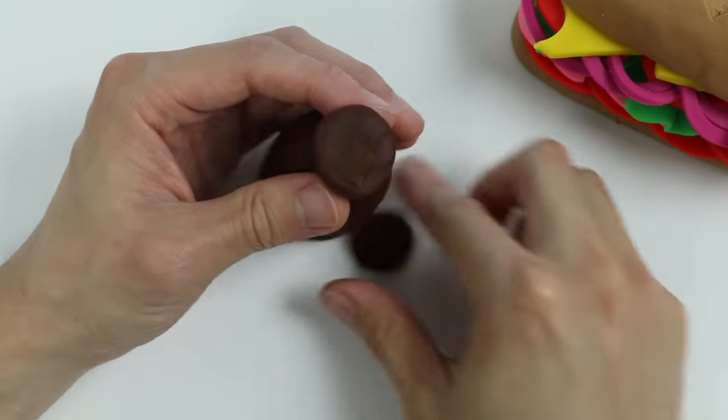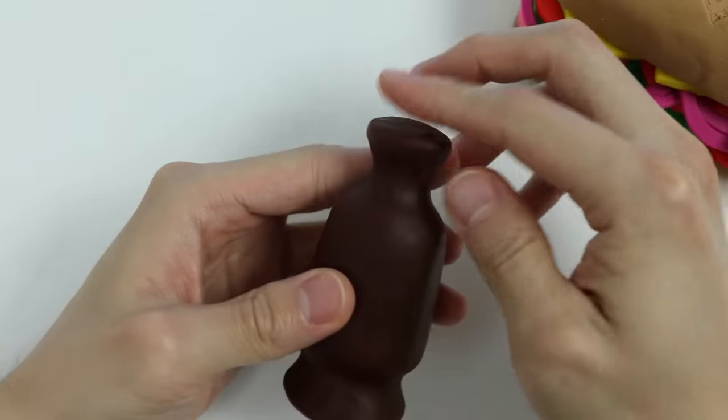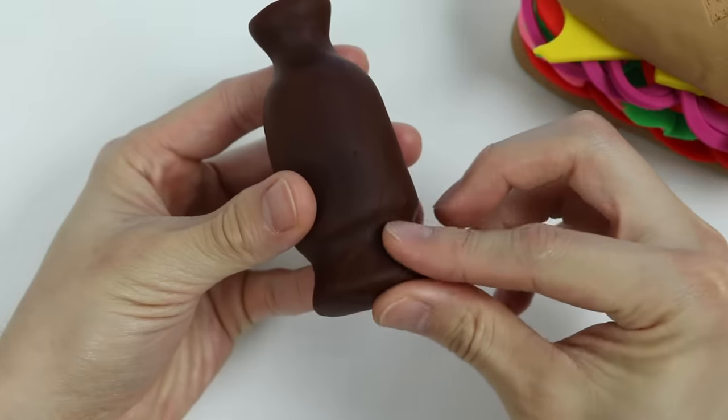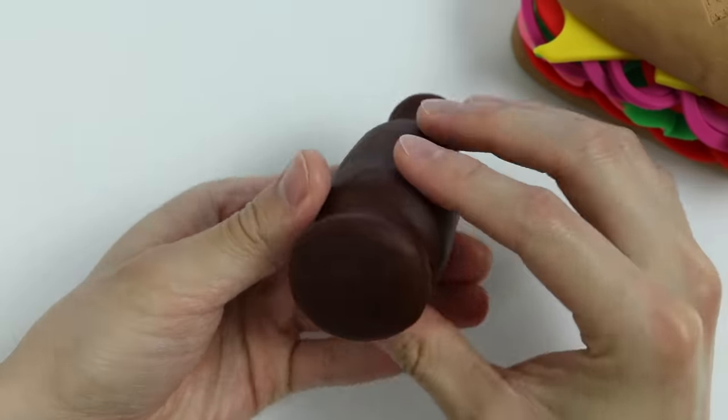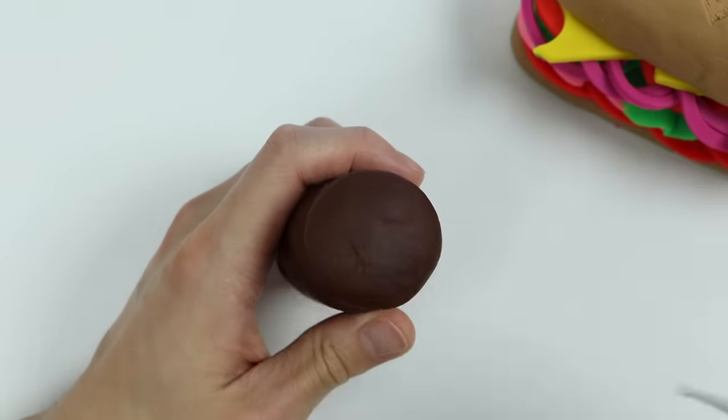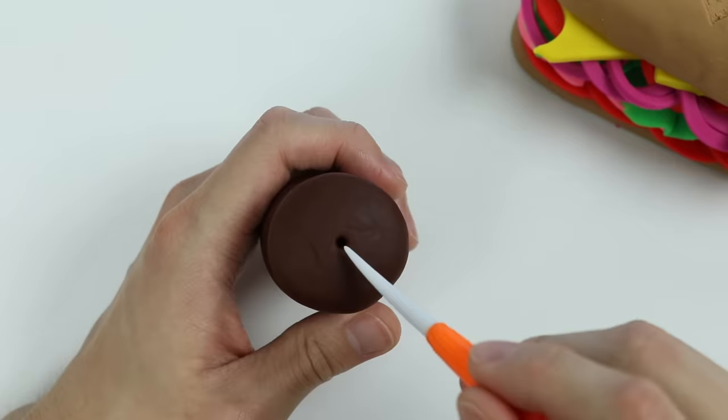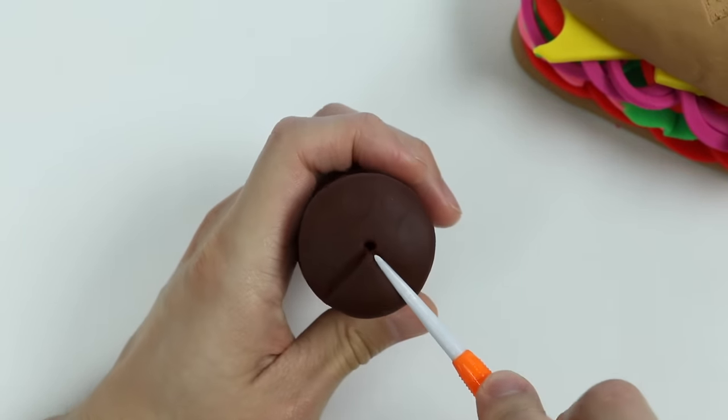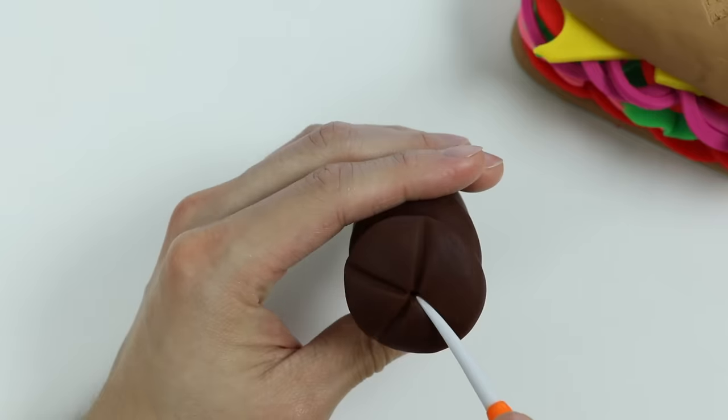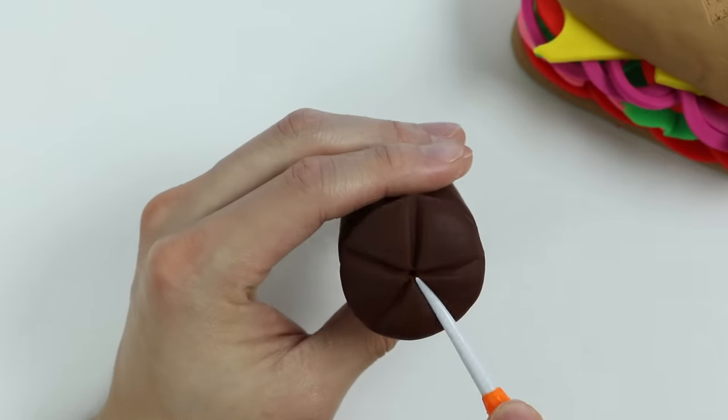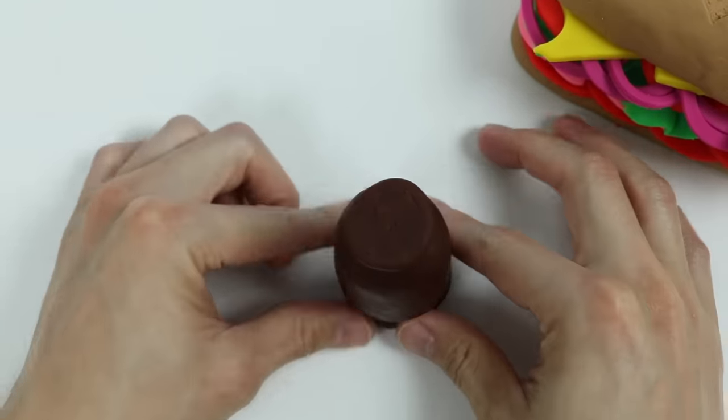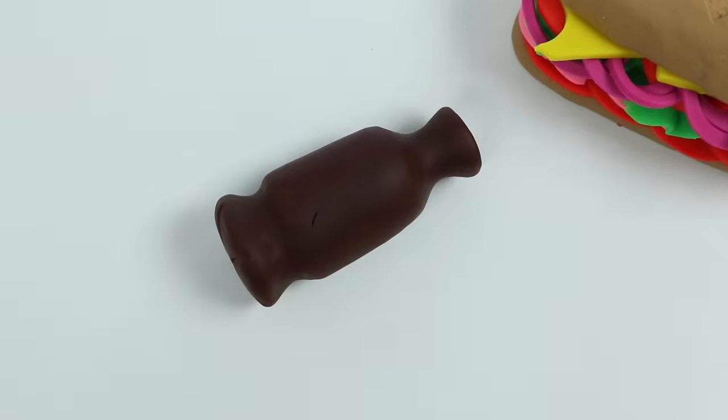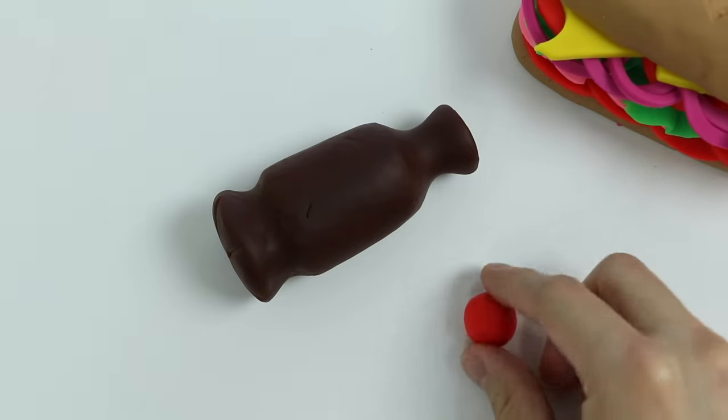Okay, we cut the top part off because we need to make the bottle cap. But before we do that, let's make the design on the bottom. Give me a minute. There we go, make sure our bottle stands perfectly still. Now let's use some red Play-Doh to make our cap.